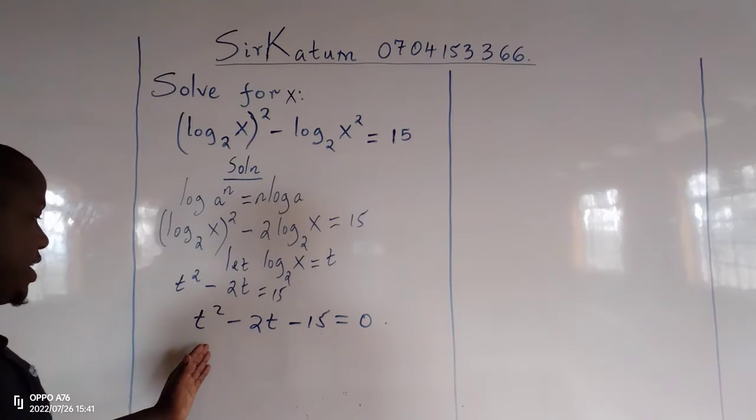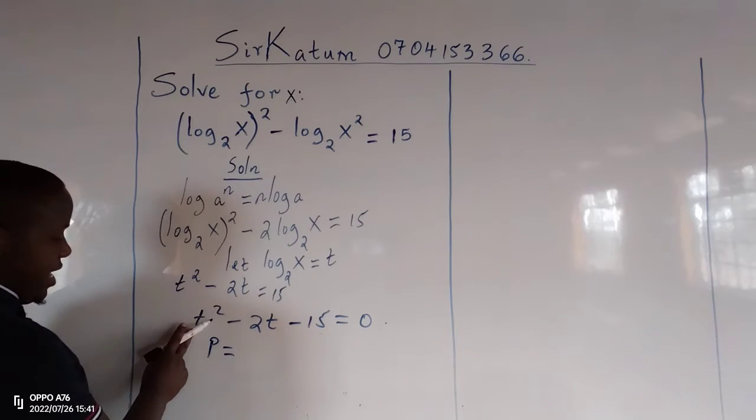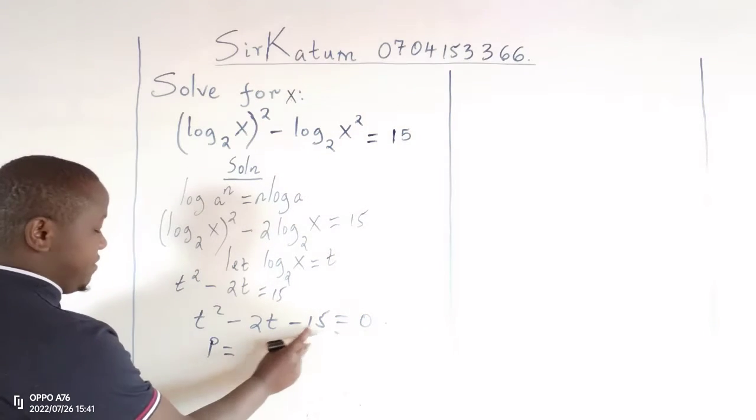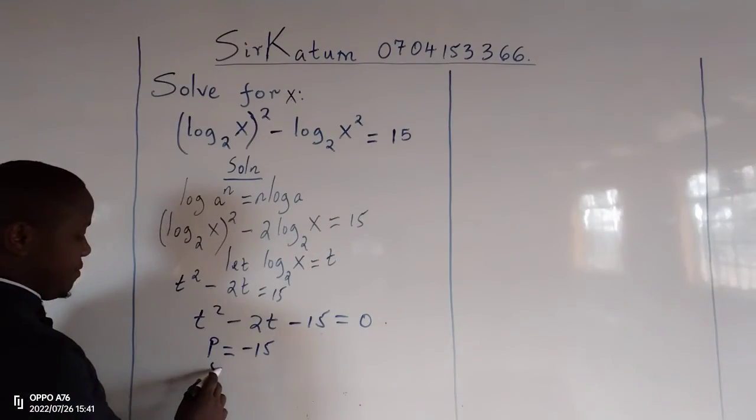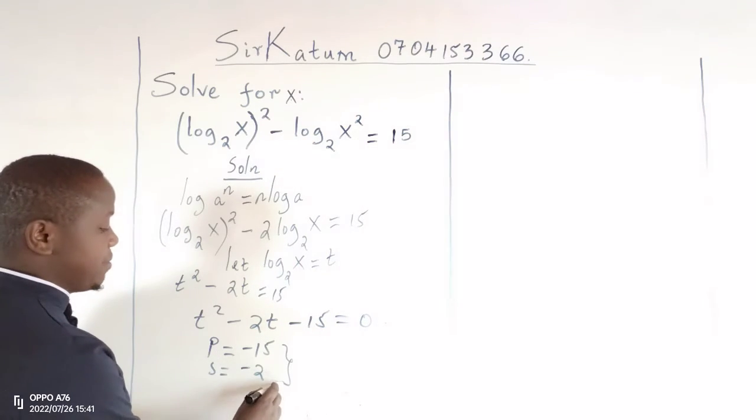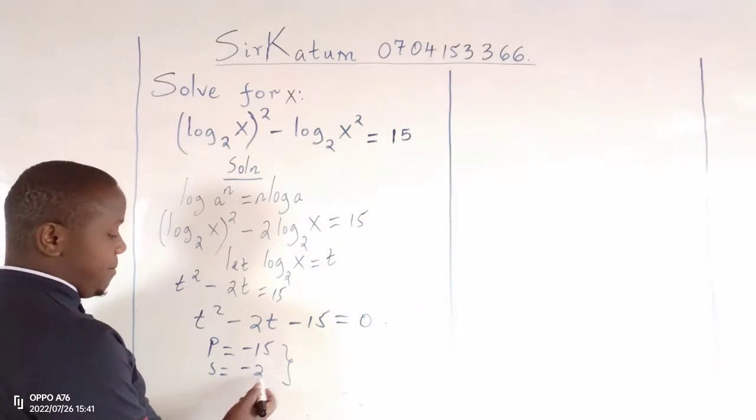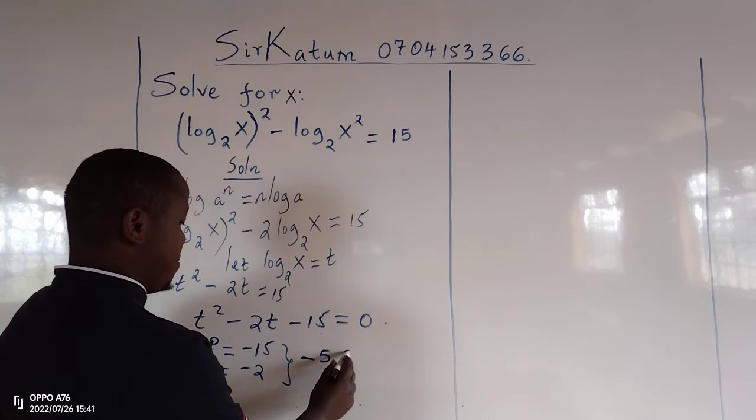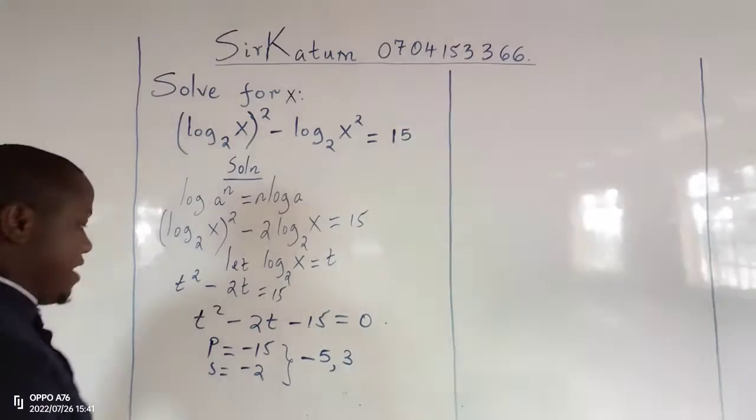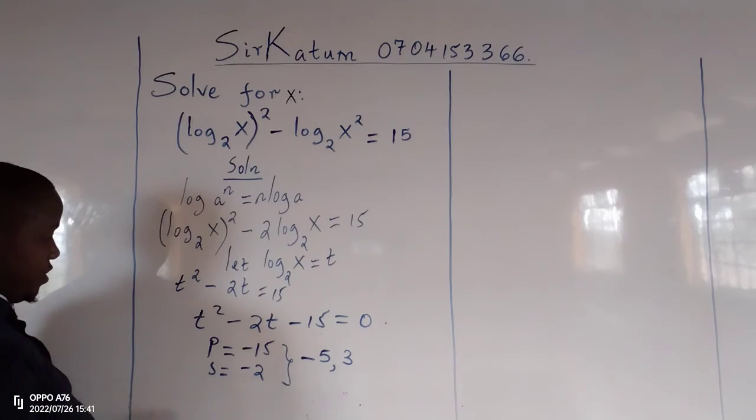Now we can solve it quadratically, in which case we can get a product of a times c, whereby it is negative 15 times 1, which is negative 15, then a sum of the value b, which is negative 2. So the two terms whose product is negative 15 and sum negative 2 are negative 5 and positive 3. Now we can replace negative 2t with negative 5t and positive 3t.